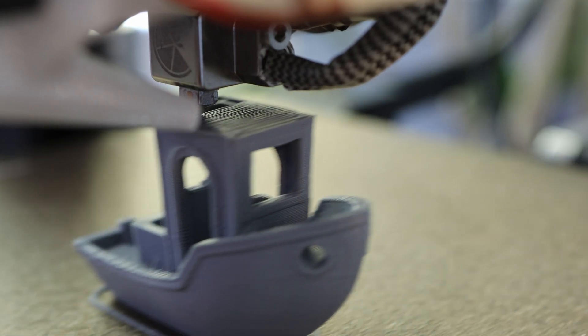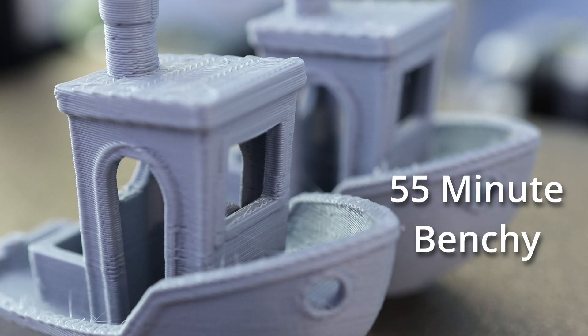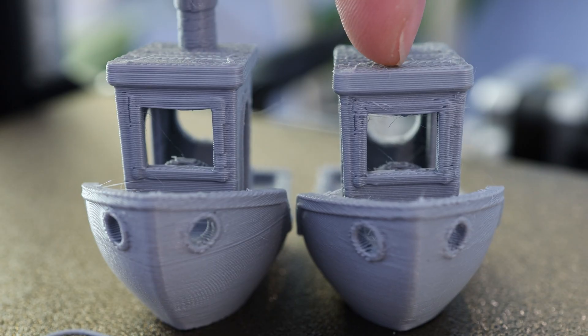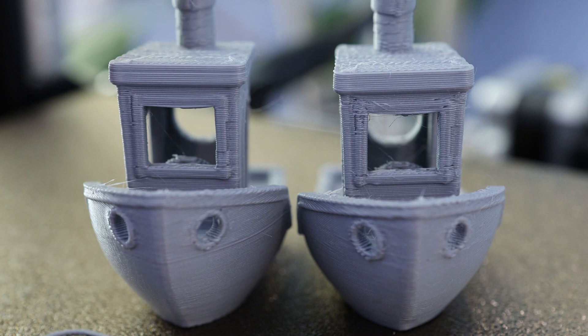Both of these benches were produced with the same g-code. You can see this one in the front looks a little bit nicer. There's less stringing. Here you can see the stock setup. Here you can see the results with the new hotend.